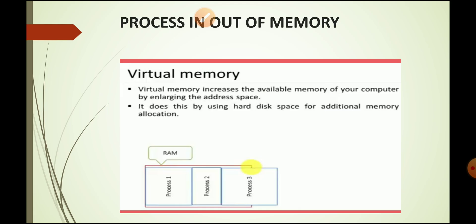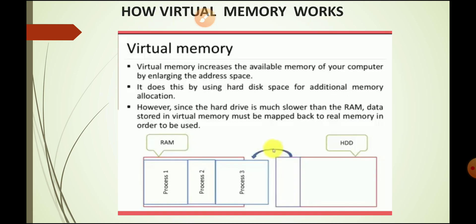This is where the virtual memory concept comes in. The hard disk is used for additional or virtual memory to increase available memory. Virtual memory enlarges the address space and gives some space to process three so it can be executed. For additional memory allocation, it maps the address space to RAM, though the hard disk is slower than RAM.